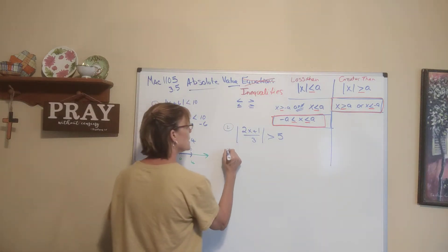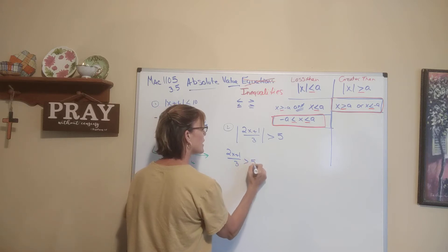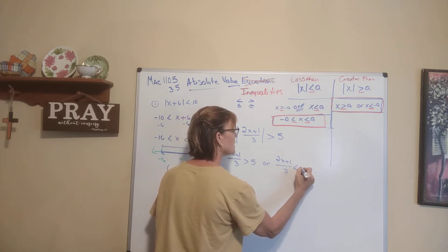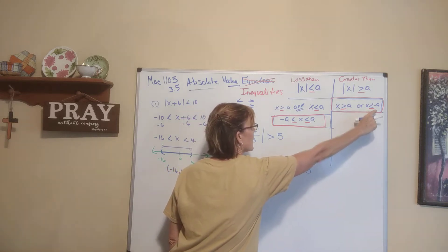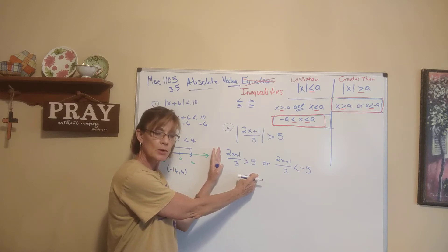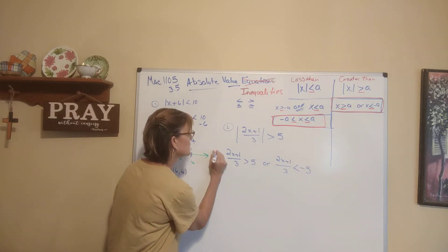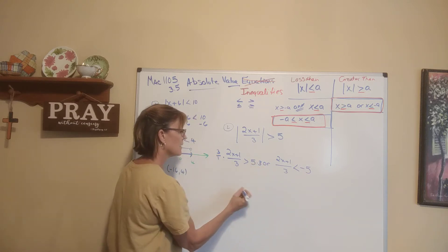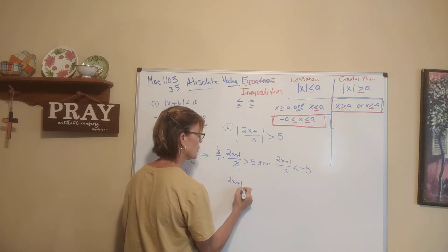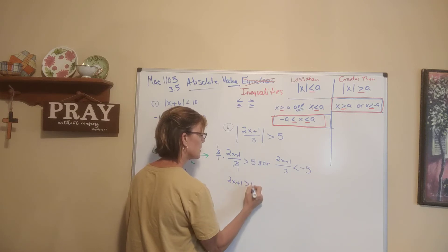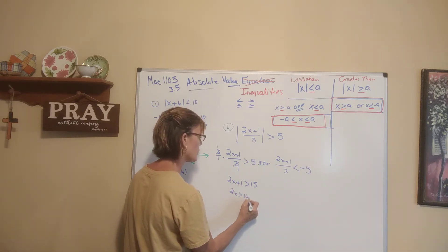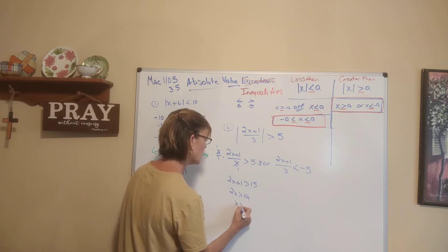The first one is: 2x plus 1 divided by 3 is greater than 5. I'll kill my fraction by multiplying both sides by 3. That gives me 2x plus 1 is greater than 15. I'll subtract 1 to get 14, divide by 2, and get x is greater than 7.